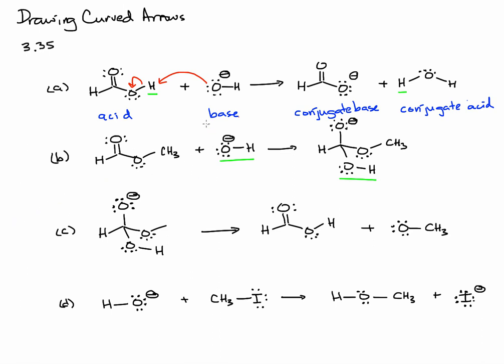We're going to introduce new concepts to classify what's happening here. We can also call a base a nucleophile. A nucleophile is a species that is electron rich. Nucleophiles react with electrophiles. An electrophile is a species that is electron deficient.